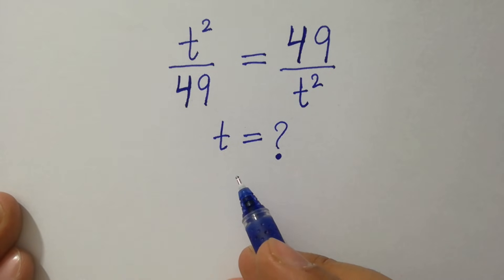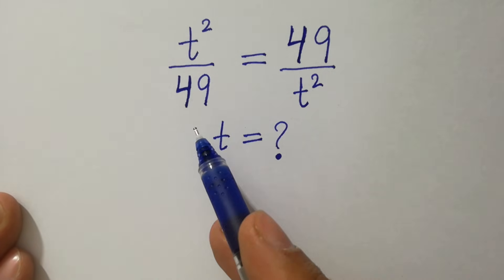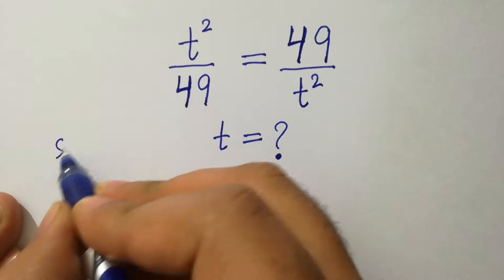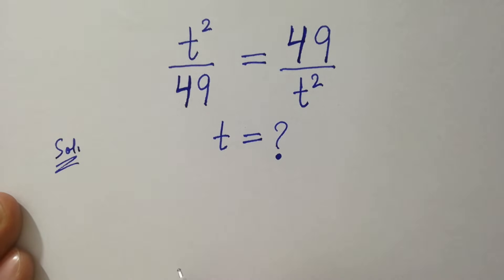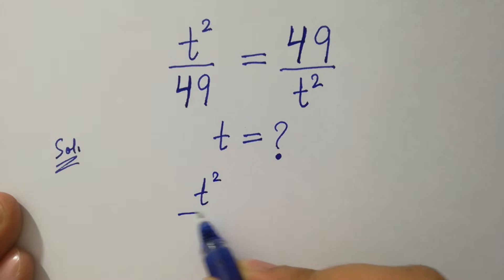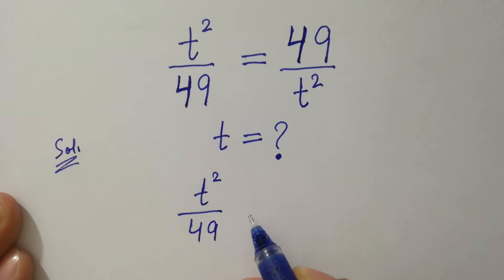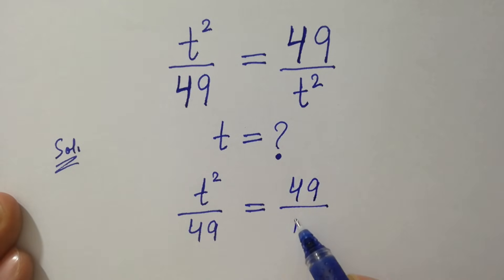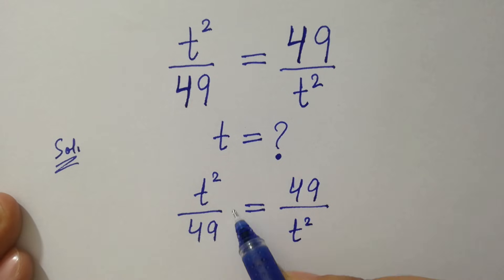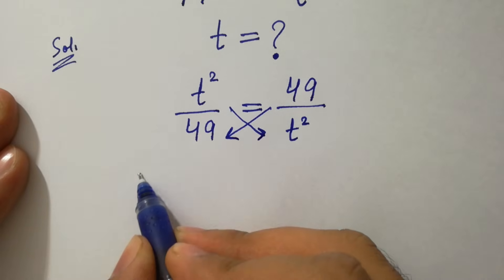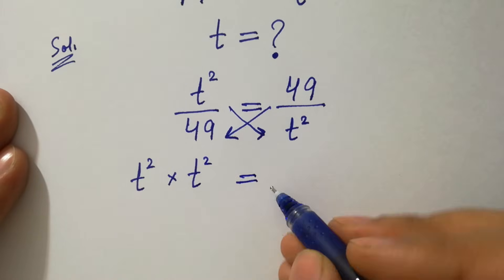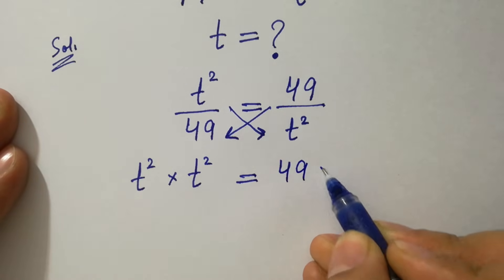Find the value of t if t² over 49 equals 49 over t². We have the problem t² over 49 equal to 49 over t². This can be solved by cross multiplication: t² times t² equals 49 times 49.